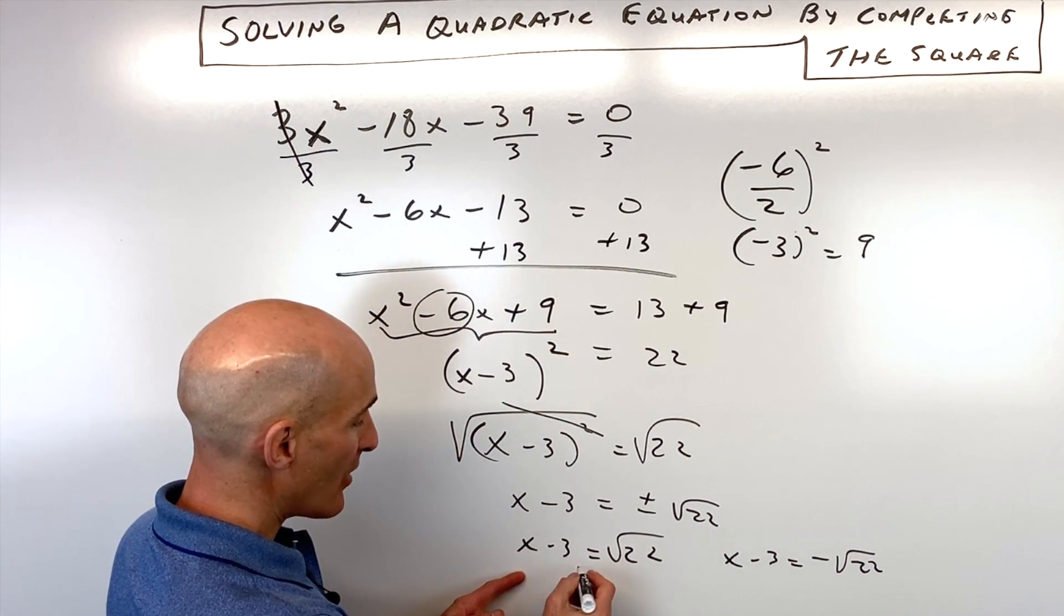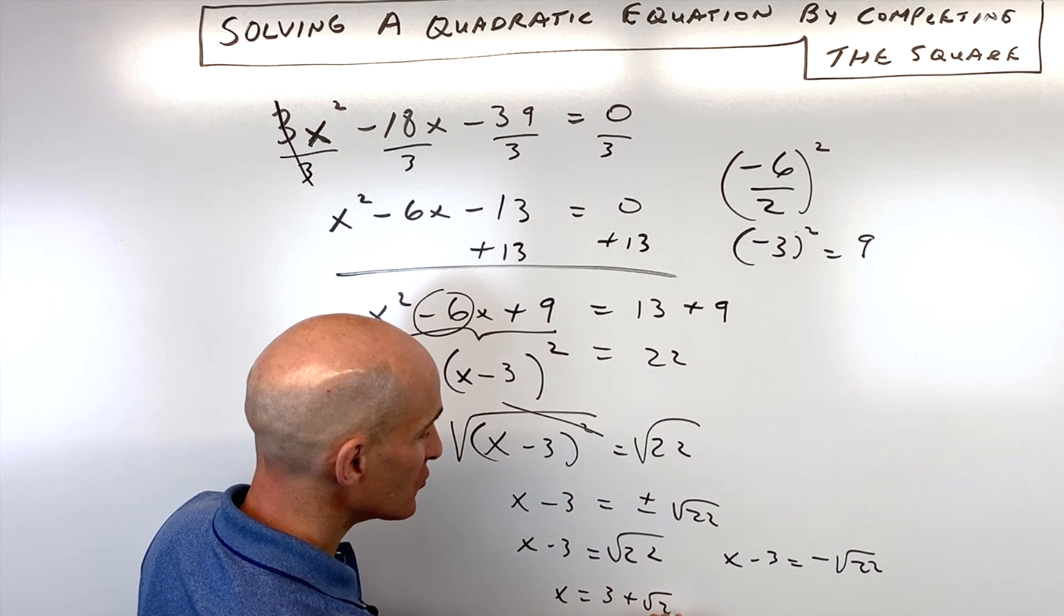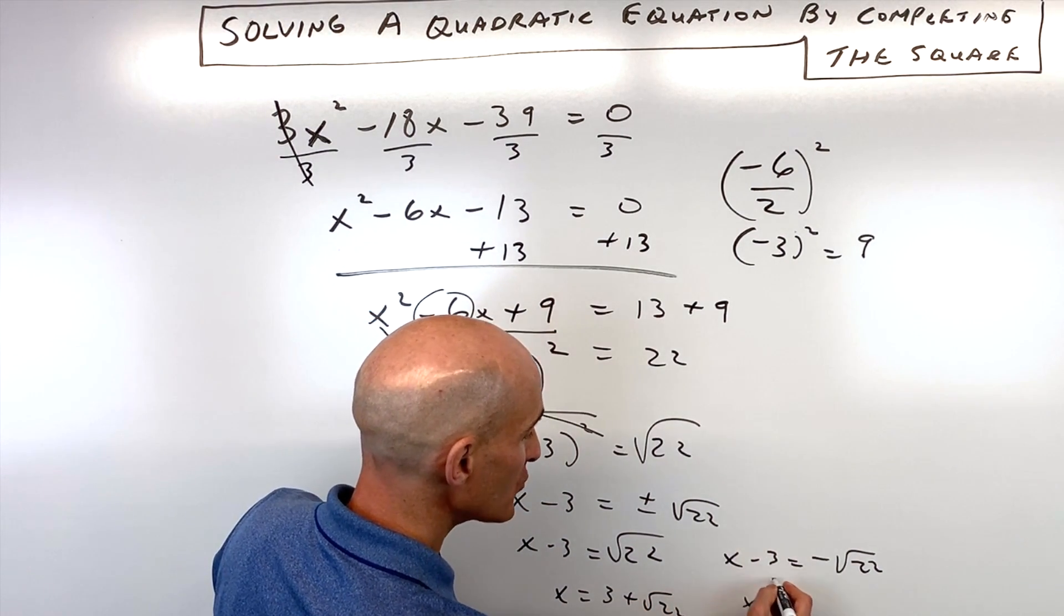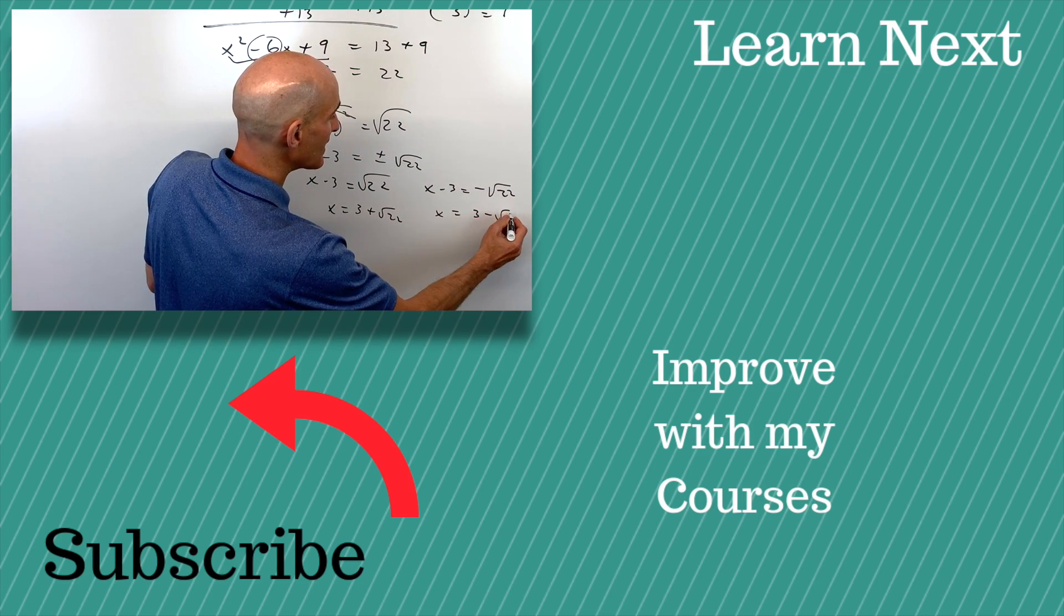And then what I'm going to do is add 3 to both sides. So I get x equals 3 plus square root of 22, and I get x equals 3 minus square root of 22.